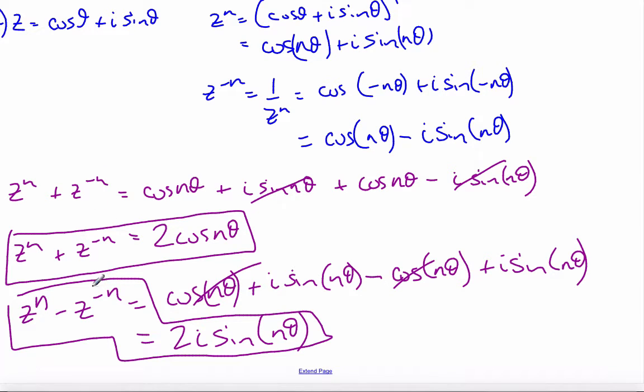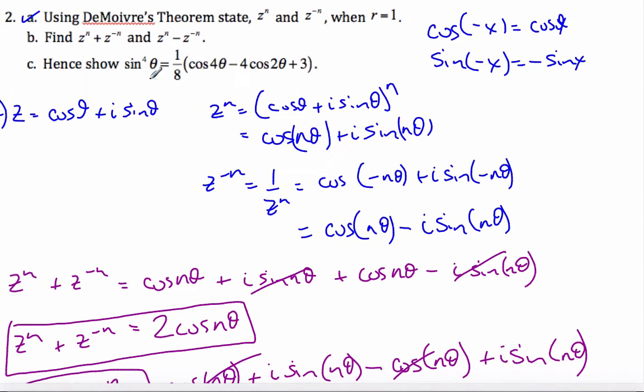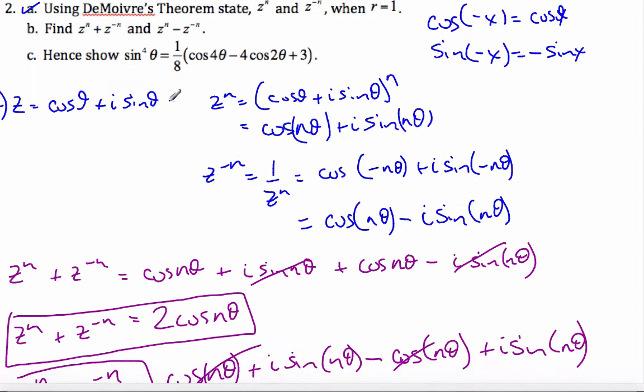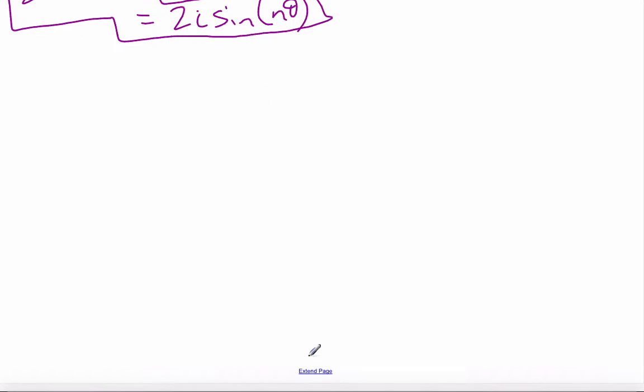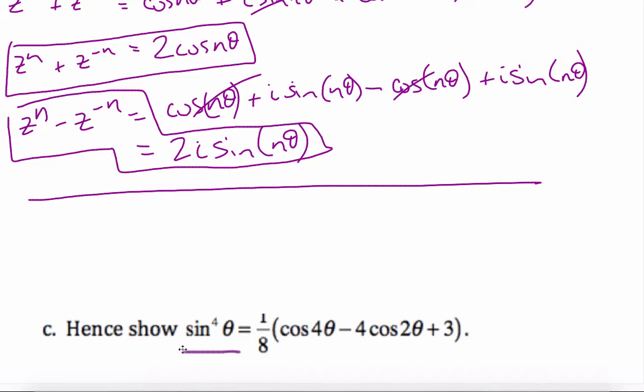And then finally, we are asked to show that sine to the power of 4 is equal to this in terms of cosine. So we're looking for sine to the power of 4. Okay, part C here, is this what we want to show? In order to show that, I'm looking for sine to the power of 4. Well, here is sine. And I want this to be a 1, but I want the exponent to be 4.